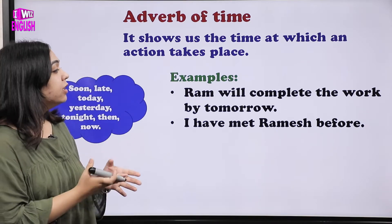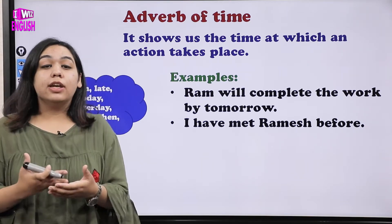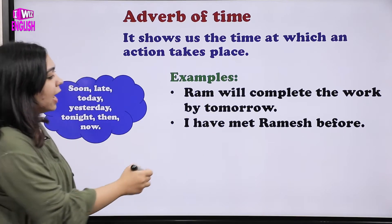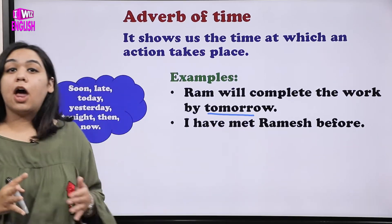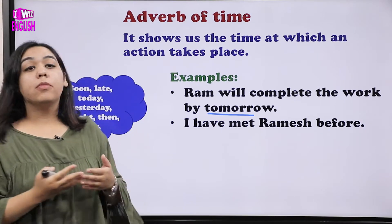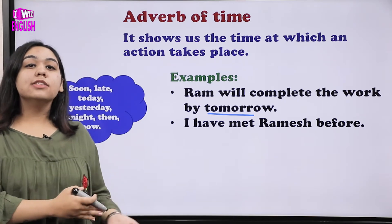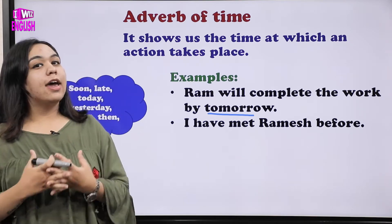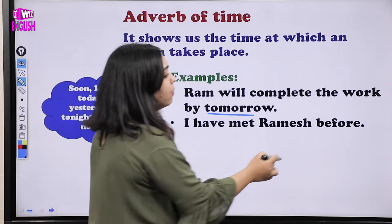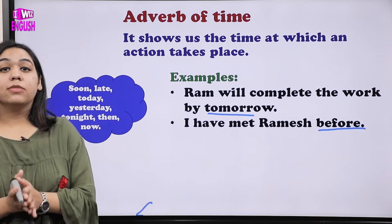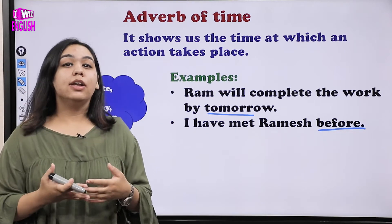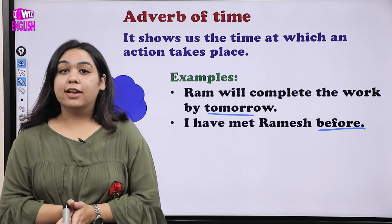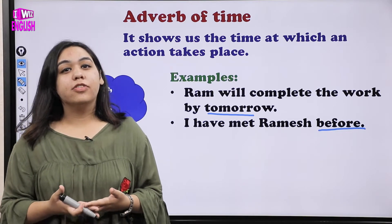For example: 'Ram will complete the work by tomorrow.' When is he going to complete? He is going to complete by tomorrow — so 'tomorrow' is the adverb of time. Another example: 'I have met Ramesh before.' Here, 'before' is also an adverb of time. More examples include: soon, later, yesterday, tonight, then.